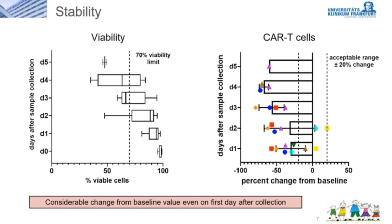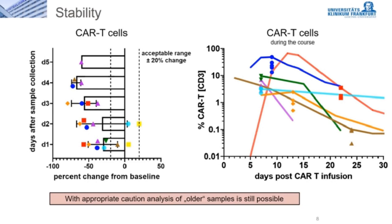In evaluating these stability results, the CAR T-cells at the peak gave a strong impression of being exhausted. We analyzed other markers of exhaustion as well. Morphological images also confirmed that the CAR T-cells appeared exhausted and apoptotic, especially in the expansion phase, more so than other immune cells. However, the general tendency of the curve was not affected and no false positives occurred, so with appropriate caution, analysis of older samples is still possible.